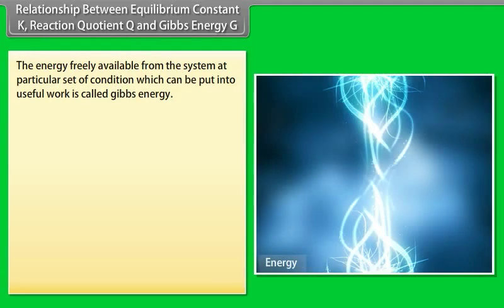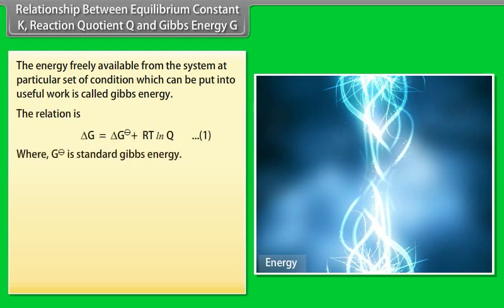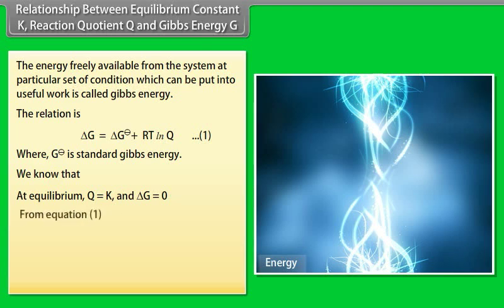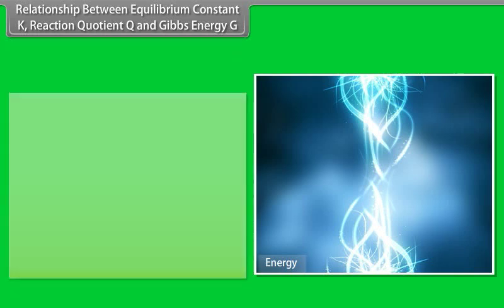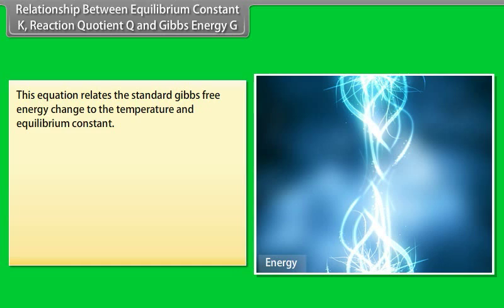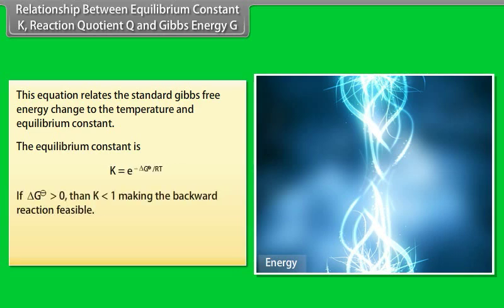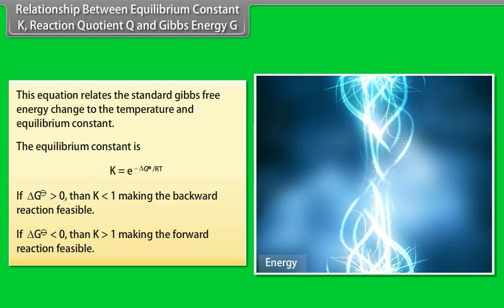Relationship between Equilibrium Constant K, Reaction Quotient Q, and Gibbs Energy G: The energy freely available from the system at a particular set of conditions that can be put into useful work is called Gibbs energy. At equilibrium, Q = K and ΔG = 0. If the standard Gibbs free energy change ΔG° > 0, then K < 1, making the backward reaction feasible. If ΔG° < 0, then K > 1, making the forward reaction feasible.